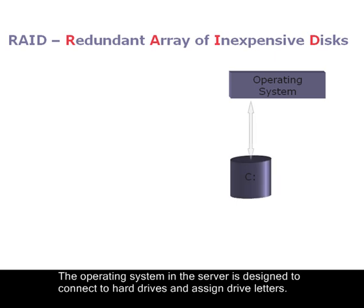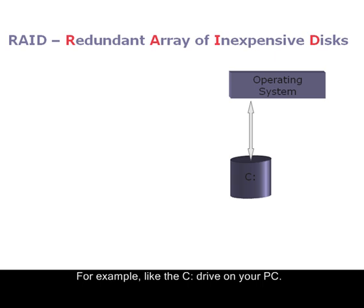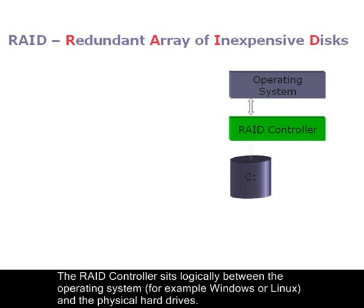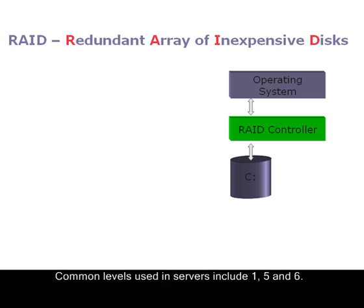The operating system in the server is designed to connect to hard drives and assign drive letters, for example like the C drive on your PC. The RAID controller sits logically between the operating system — for example Windows or Linux — and the physical hard drives. There are a number of RAID levels which offer a combination of performance and resilience. Common levels used in servers include 1, 5, and 6.